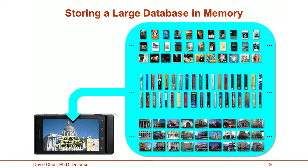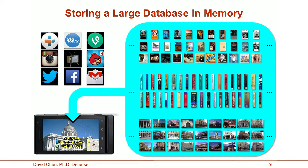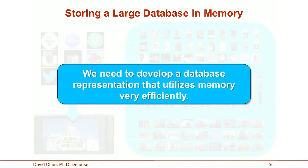An attractive alternative would be to store the database directly on the mobile device. But now we really have to contend with the small memory capacity of the phone, which is typically one to two orders of magnitude smaller than the server's memory, and this memory space has to be shared with all the other apps the user is likely to run concurrently. So here we've identified a second major requirement: we need a database representation that utilizes memory very efficiently.